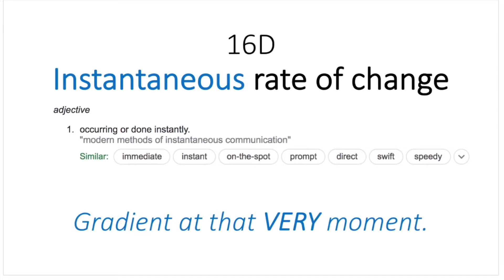In the last video we talked about 16c average rate of change, and in this video we'll talk about 16d instantaneous rate of change. The word instantaneous means to occur or done instantly, so when talking about instantaneous rate of change we're talking about gradient at that very moment.